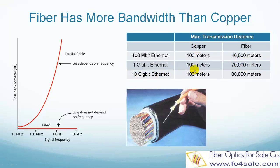For 10 gigabit Ethernet, copper is still 100 meters, and fiber is 80 kilometers. Now you see the difference. The bottom picture shows the size comparison between a copper cable and an optical fiber. Both carry the same bandwidth.